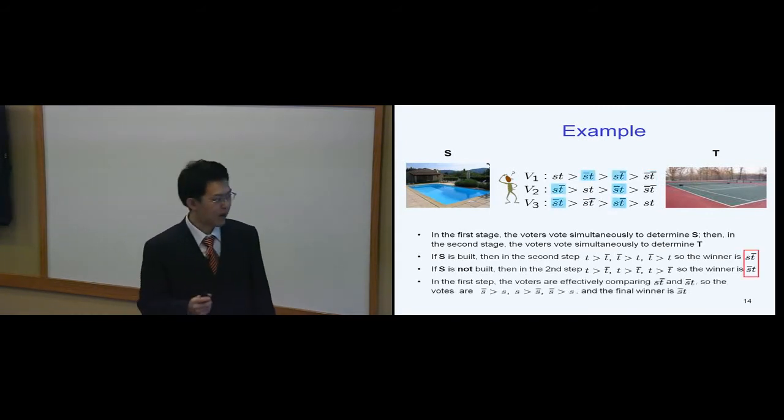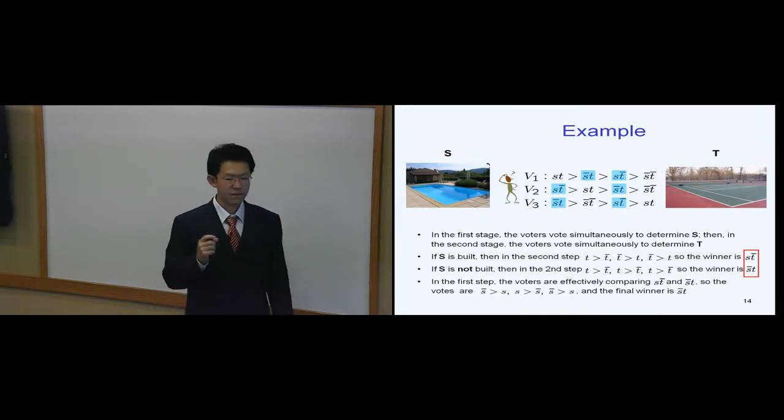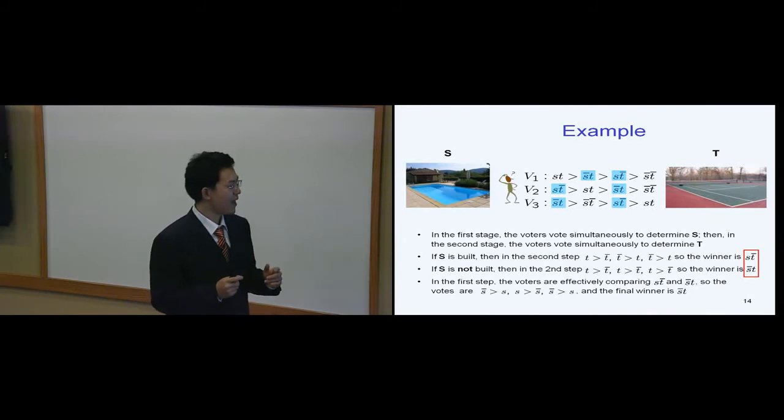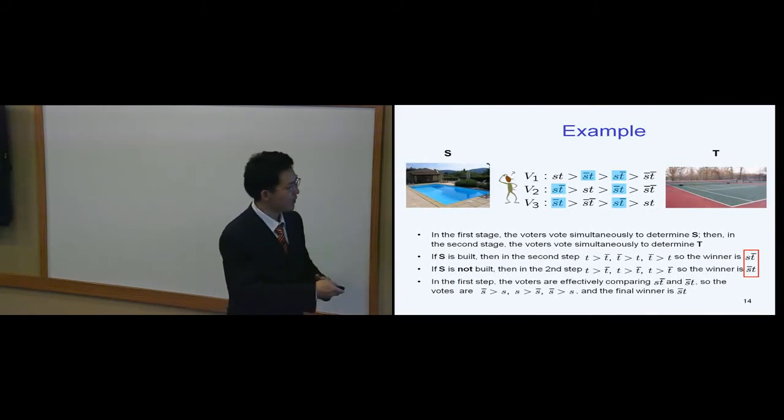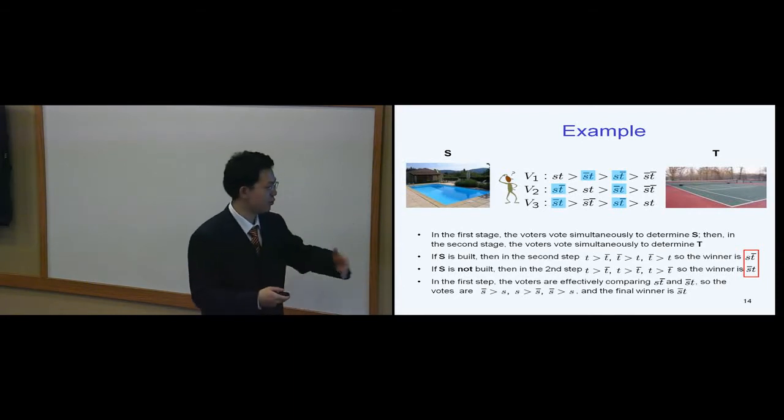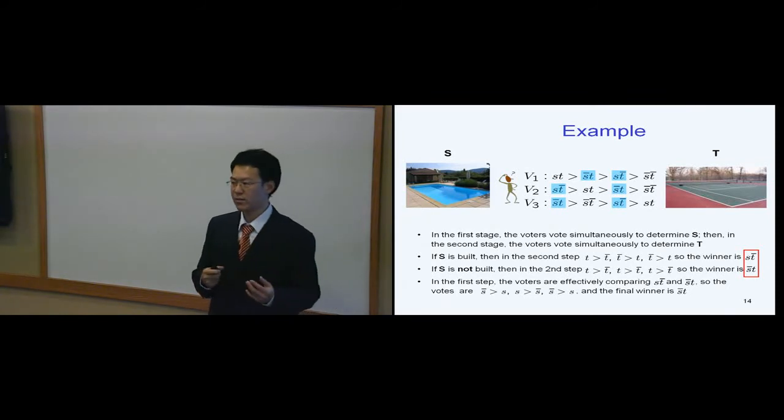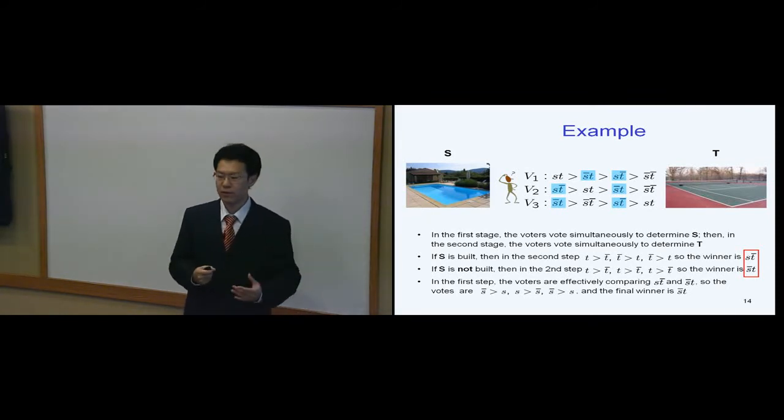So the trickiest part of this strategic sequential process is that in the first stage, when we vote whether or not should we build a swimming pool, actually we are comparing between S0T and 0ST, which are the winner of the previous steps. Again, because majority rule is strategy-proof, it's just always my dominant strategy to vote for my preferred candidate.